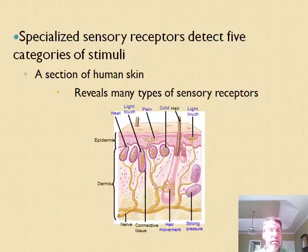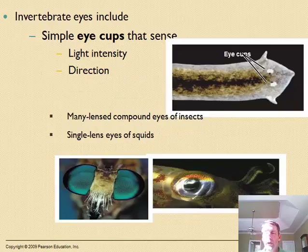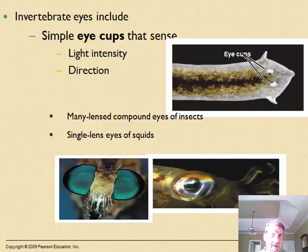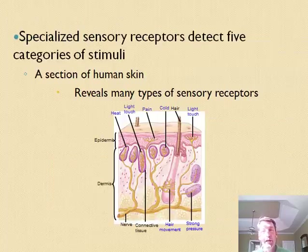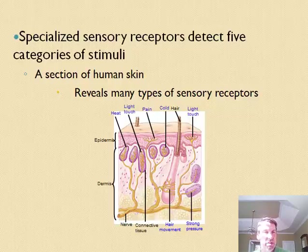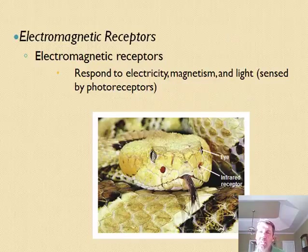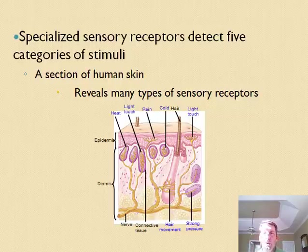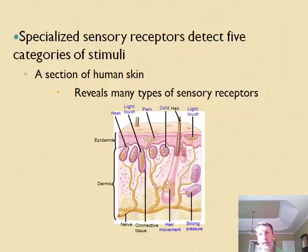Photoreceptors pick up light — our eyes contain rods and cones for picking up light intensity. Animals have compound eyes (insects), single-lens eyes (squid), and single-lens eyes like ours. Thermoreceptors in our skin respond to hot or cold. Electroreceptors pick up electrical energy — for example, certain viper snakes use infrared receptors to detect prey. Each receptor type is specialized for a different form of input, all sending information to the brain.